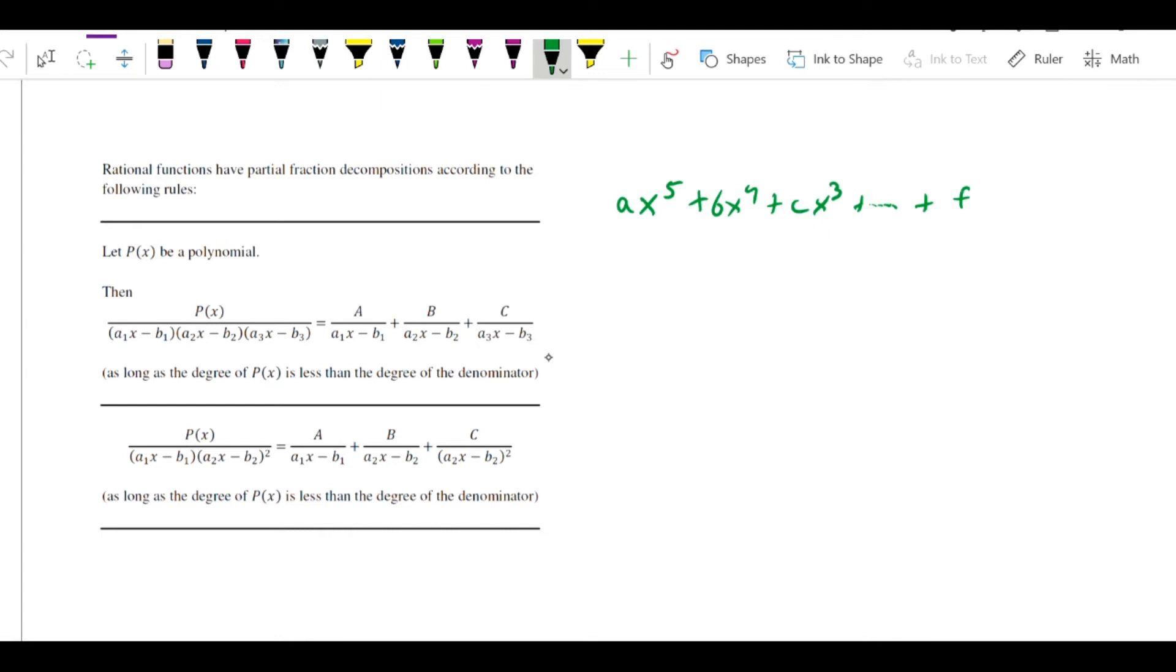If I have such a polynomial, as long as the degree of the polynomial is less than the degree of the denominator, and when I say the degree, I mean the highest power that appears in the polynomial, as long as that is true, and as long as the denominator decomposes into what we're going to call linear factors, in other words, the highest power in each of these factors is 1, then I can decompose it this way. I can simply put constant over linear factor 1, then another constant over linear factor 2, another constant over linear factor 3.